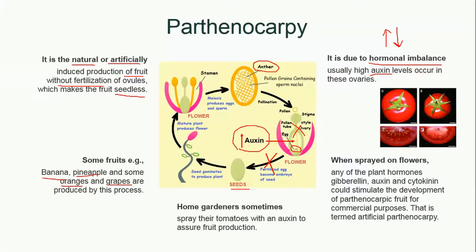Normally, high auxin levels in the ovule are responsible for parthenocarpy. However, if you are artificially inducing parthenocarpy, you spray the flowers of plants with hormones such as gibberellin, auxin, or cytokinin. These hormones stimulate the development of parthenocarpic, meaning seedless, fruits.